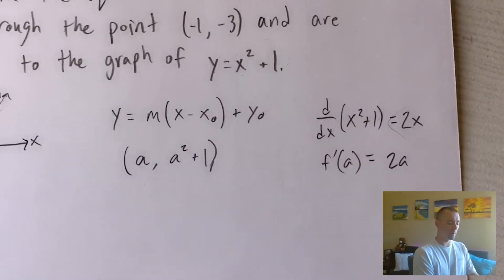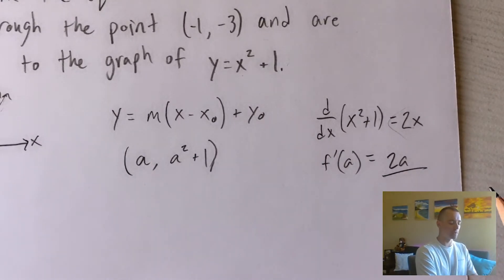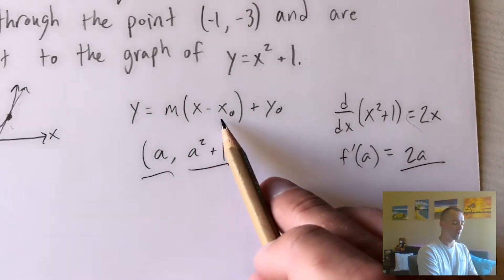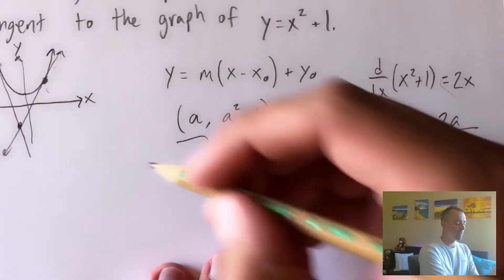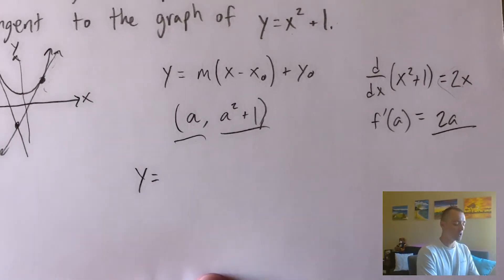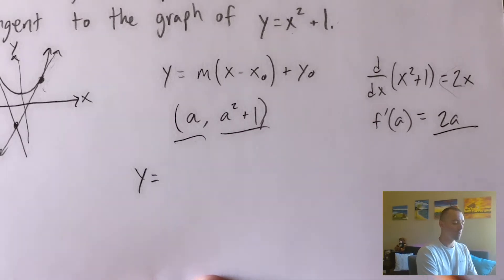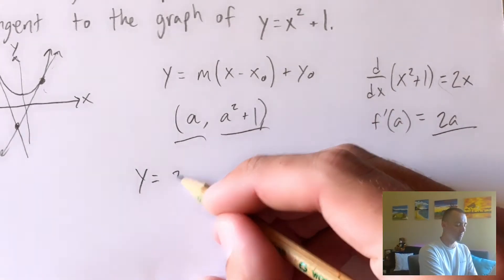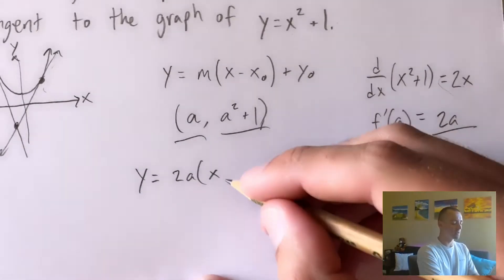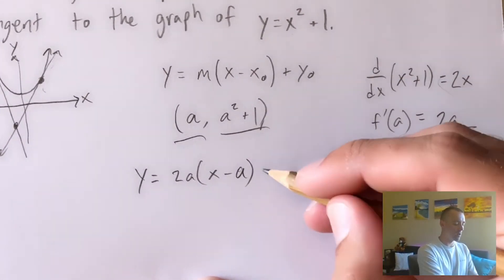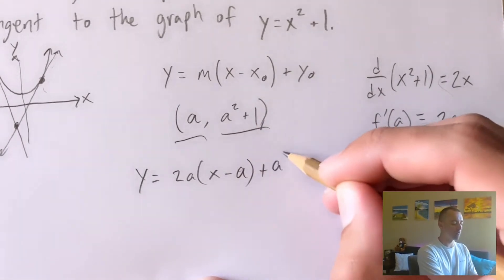So we've figured out the slope of our function at this point, and the x and y coordinates. Plugging these three pieces into the generic line equation, our slope M is two A, x stays as x, x-zero is A, and y-zero is A squared plus one. So y equals two A times (x minus A) plus (A squared plus one). We know that each of these tangent line equations needs to follow this general format.